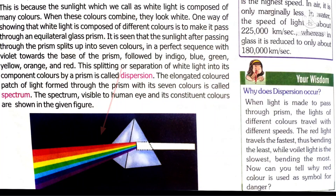Look at the VIBGYOR colors. Red light bends very little, whereas violet color bends more. This is because red light has a longer wavelength, while violet has a shorter wavelength. Since red color light has a longer wavelength, it travels faster — its velocity is greater — and that is why it bends the least.